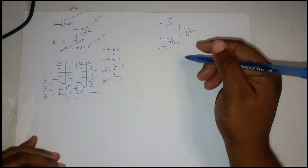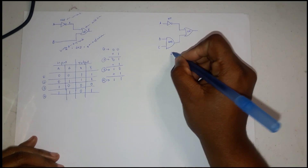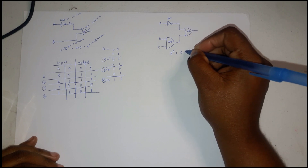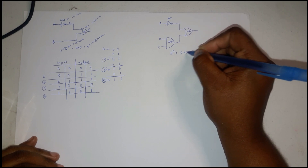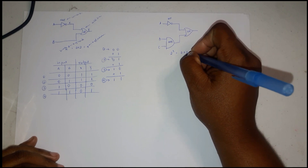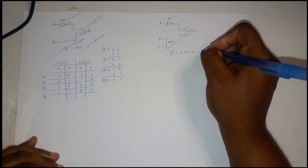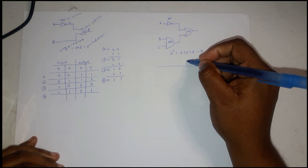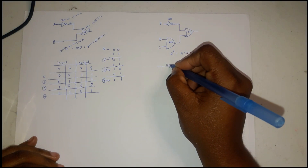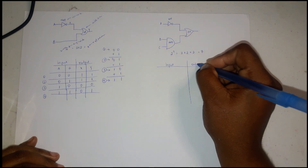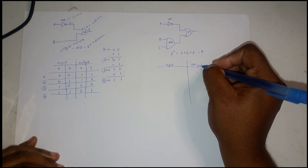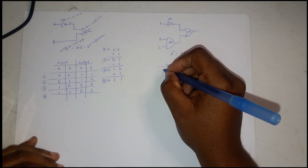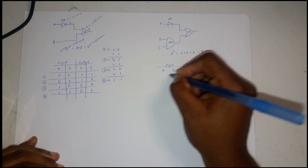Now for the second circuit, we have three inputs, so we raise 2 to the power of 3 — that's 2×2×2 = 8 outcomes. We have inputs A, B, and C.